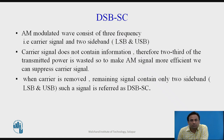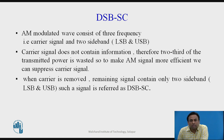We start with DSBSC. As seen in the previous lecture, a modulated wave consists of three frequencies: the carrier signal and two sidebands, LSB and USB. The carrier signal does not contain any information, therefore two-thirds of the transmitted power is wasted. To make an AM signal more efficient, we can suppress the carrier signal. When the carrier is removed, the remaining signal contains only two sidebands, LSB and USB — this is referred to as DSBSC.